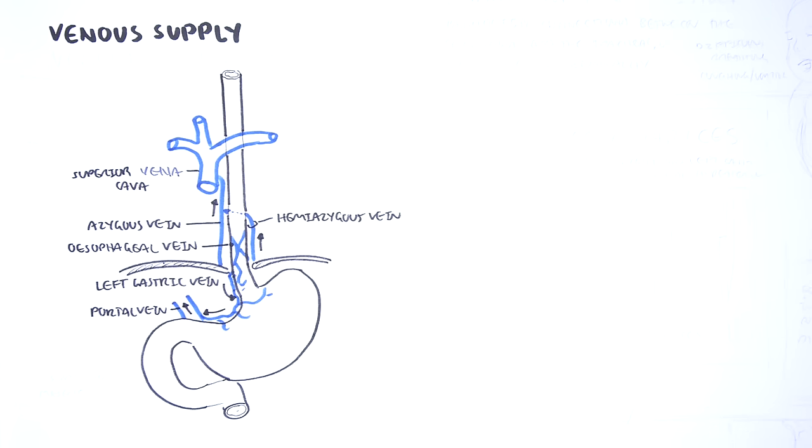Esophageal varices: anastomoses between the azygos and left gastric vein may develop varices from portal hypertension. Here we have the portal vein. You can imagine in liver cirrhosis where the liver becomes fibrosed. This increases resistance in the portal vein causing portal hypertension. This means that blood can get pushed back to the splenic vein, superior mesenteric vein, and also the left gastric vein causing esophageal varices.